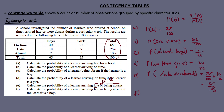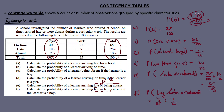F: calculate the probability of a learner arriving late or being absent if the learner is a boy. We focus on the boys group — the sample space is 65. Late boys is 18 and absent boys is 7. So the probability equals 18 over 65 plus 7 over 65, giving 25 over 65. That's example number 1 done.